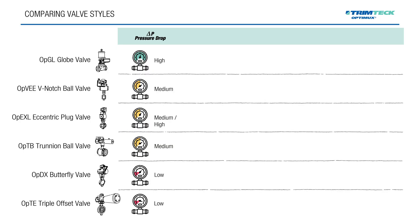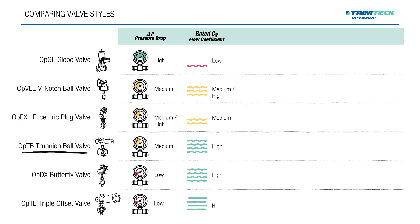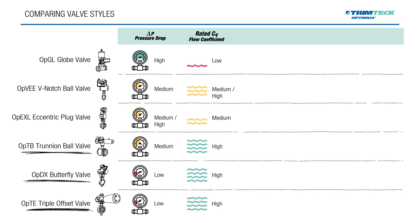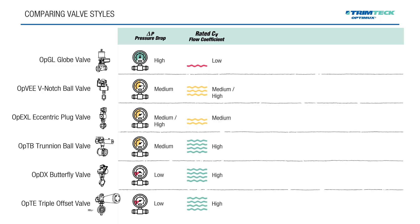Next, let's talk about rated CV or flow capacity. As you may remember from our What is CV video, CV measures how much flow a valve allows under specific conditions. Trunnion ball and butterfly valves tend to offer the highest rated CV values, ideal for large flows at lower pressure losses. Globe and eccentric plug valves typically have lower rated CV per size, but provide excellent control.